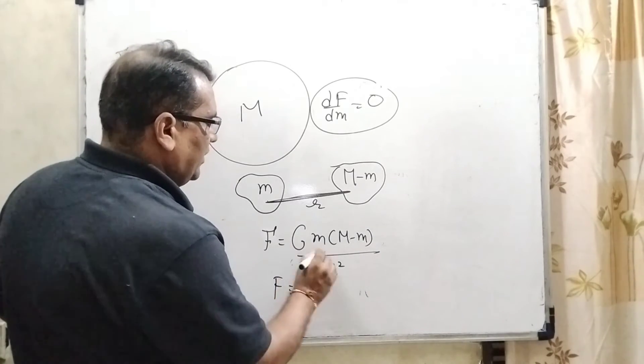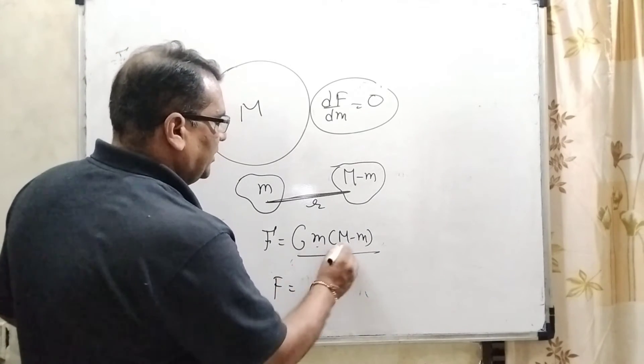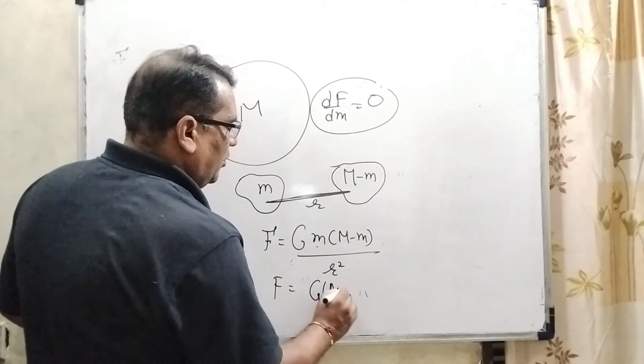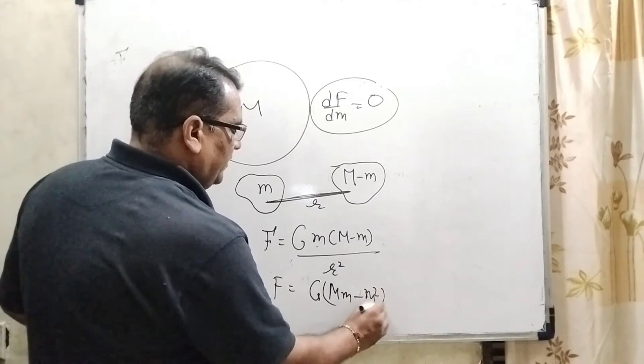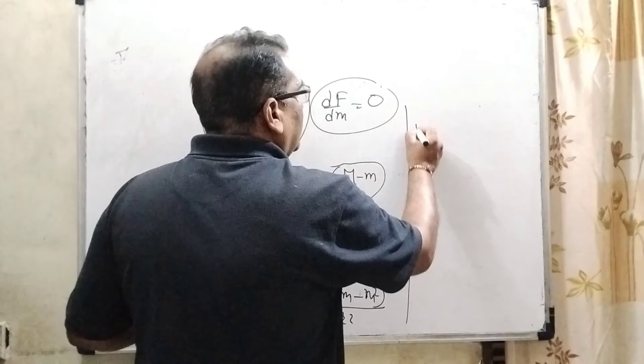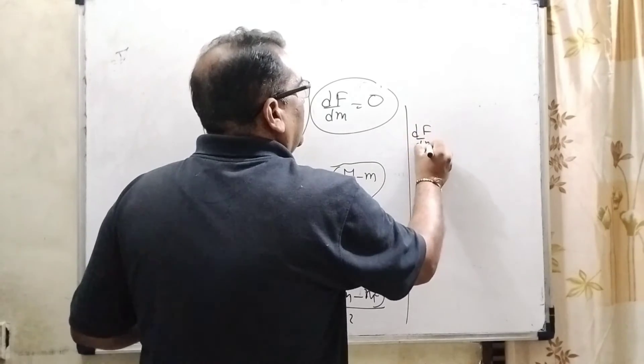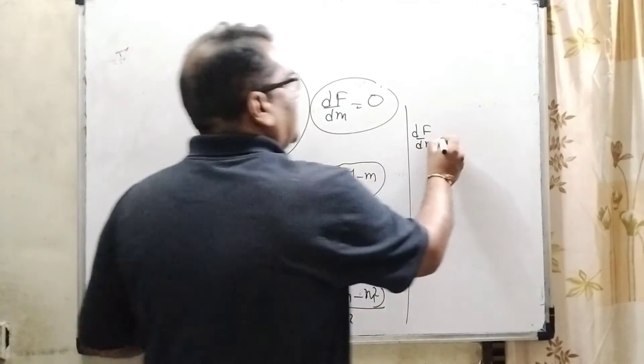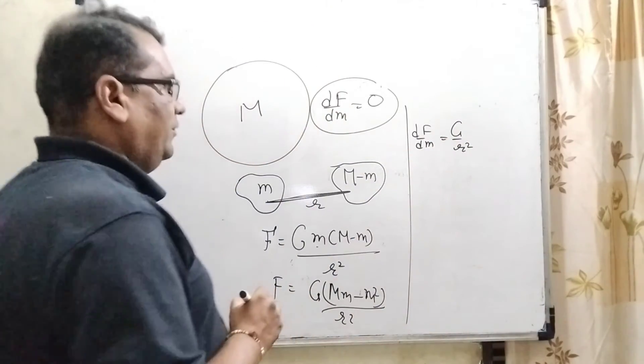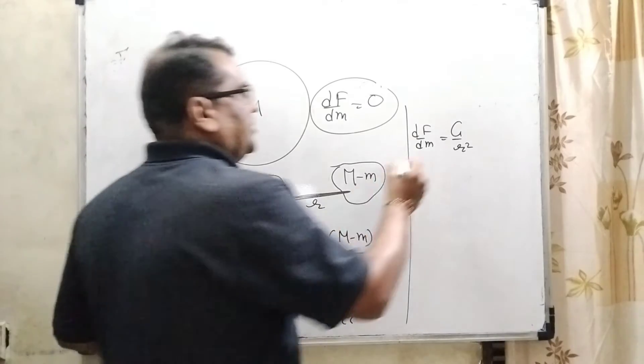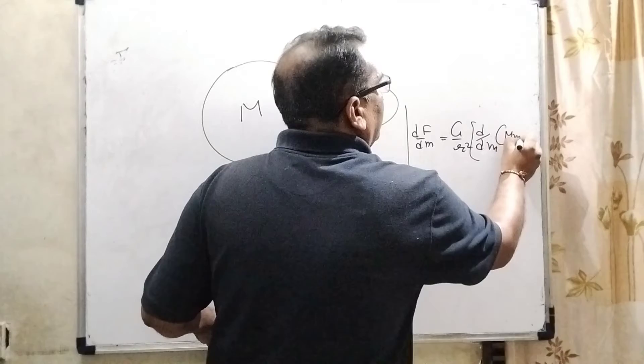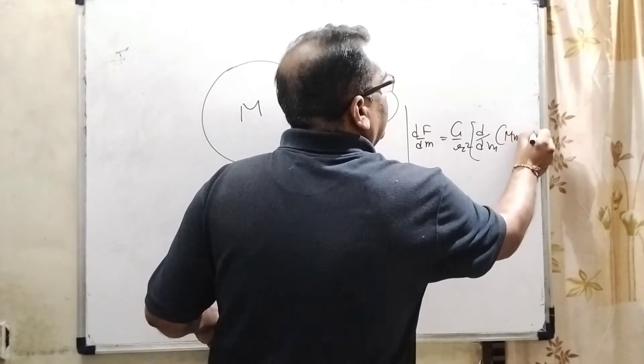So differentiate. Let us first we have to simplify G multiplied by capital M times small m minus m square upon R square, and then differentiate with respect of m.